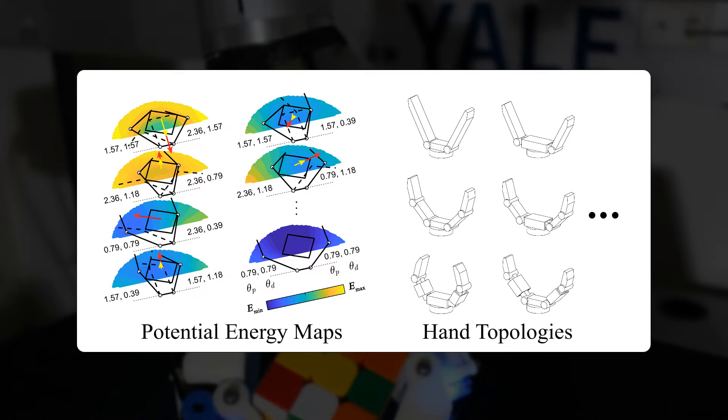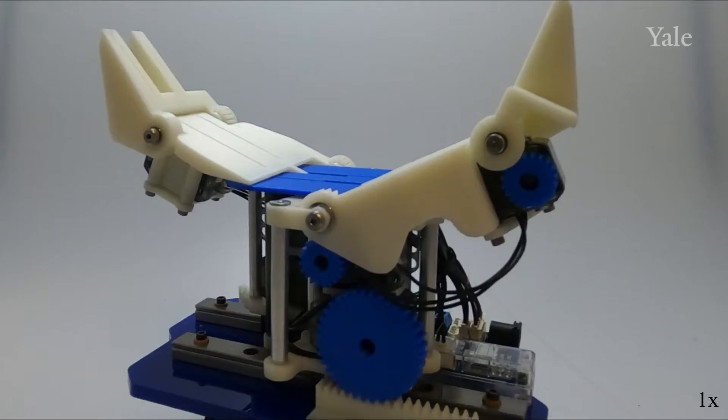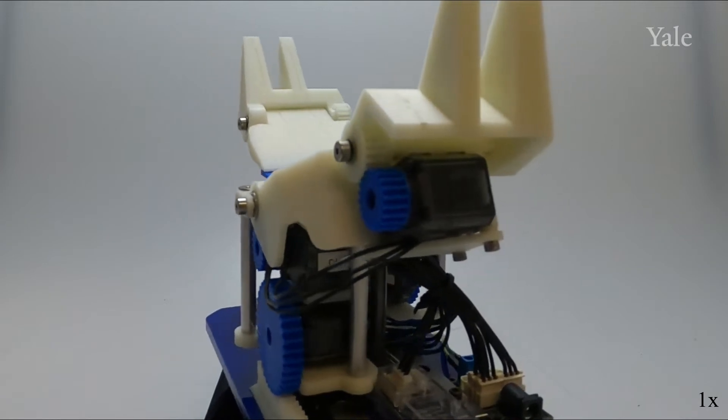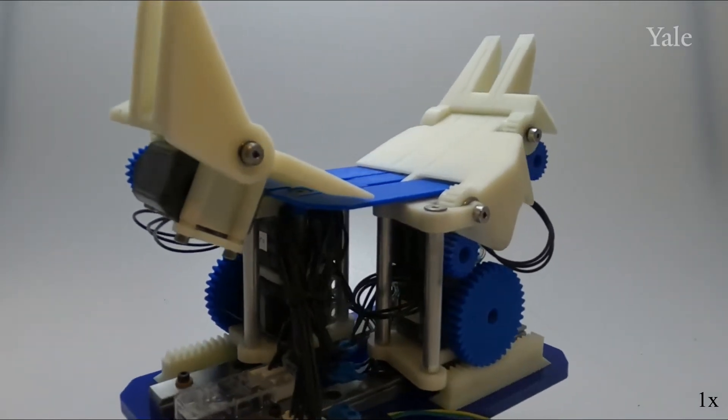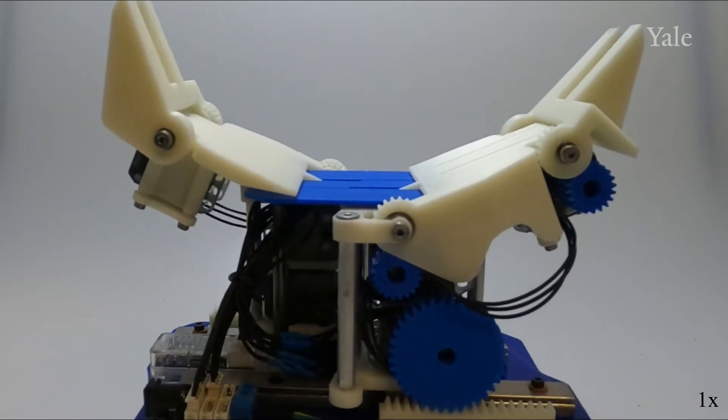By enumerating thousands of planar manipulators, we systematically developed and designed a highly dexterous hand. We present our design, the Model W, a fully actuated robotic hand optimized according to the aforementioned energy model. The final design consists of two fingers, each with two revolute joints.